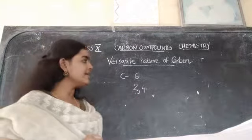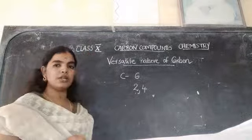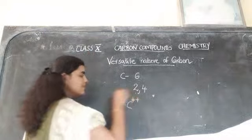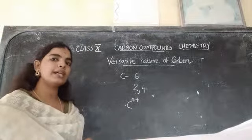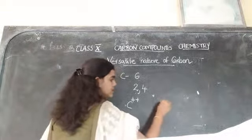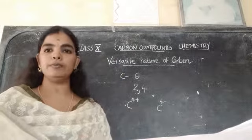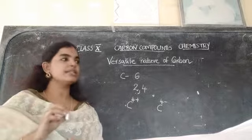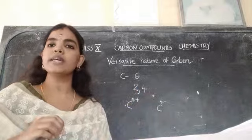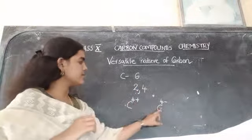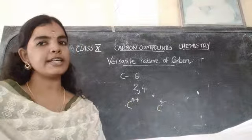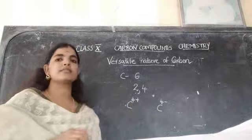Which are the 2 possibilities? Either carbon can lose 4 electrons, and after losing 4 electrons it will become a C4+ ion. Or the other possibility is it can gain 4 more electrons, and thus it will become a C4- ion. So in order to complete its octet, atoms are either sharing or losing electrons. In the case of carbon, since there are 2 possibilities — formation of C4+ or C4- — but in the case of carbon, both formations of these ions are not possible.